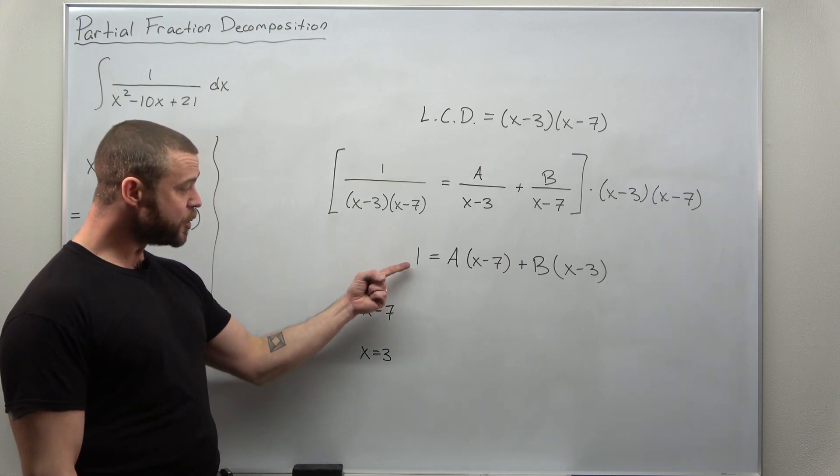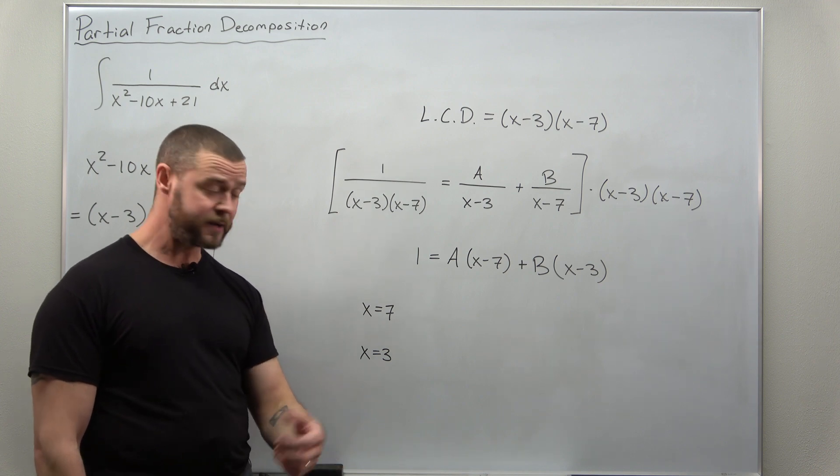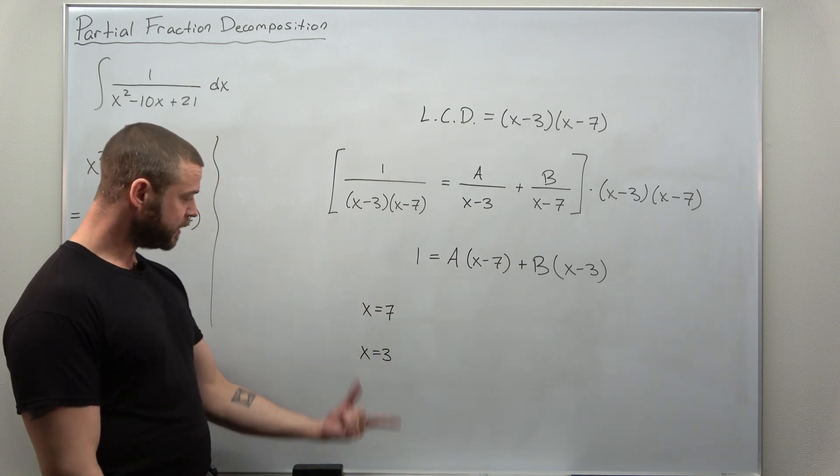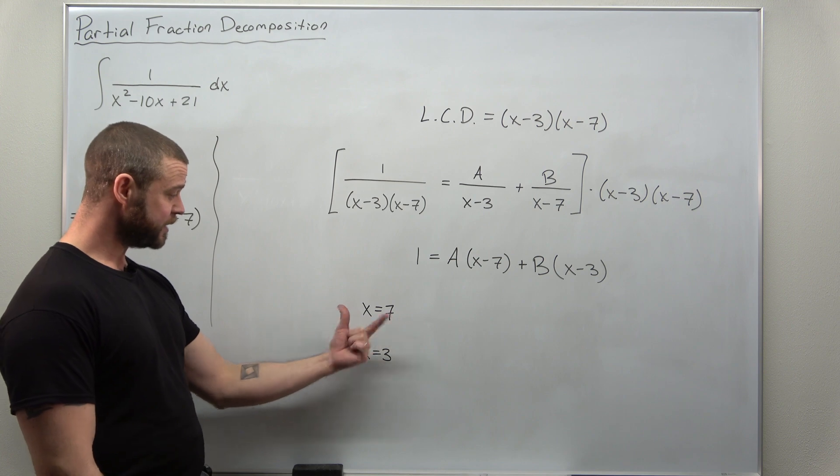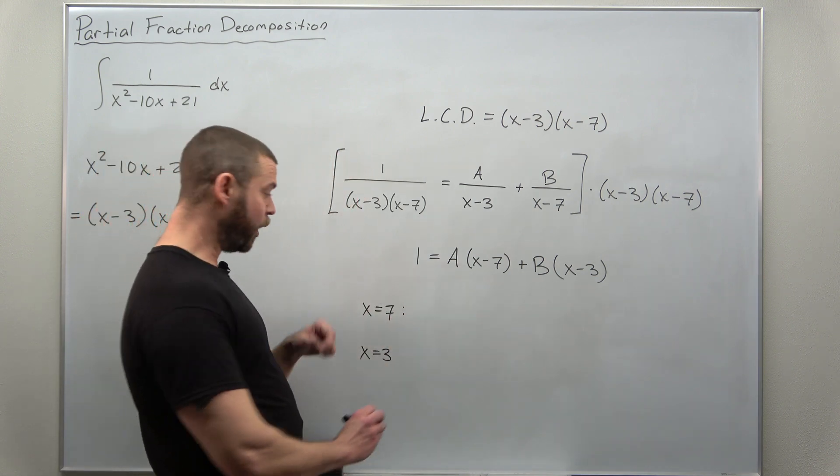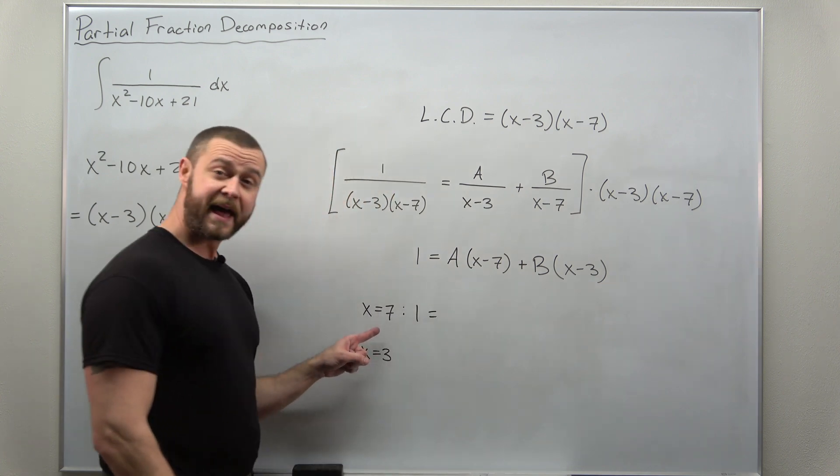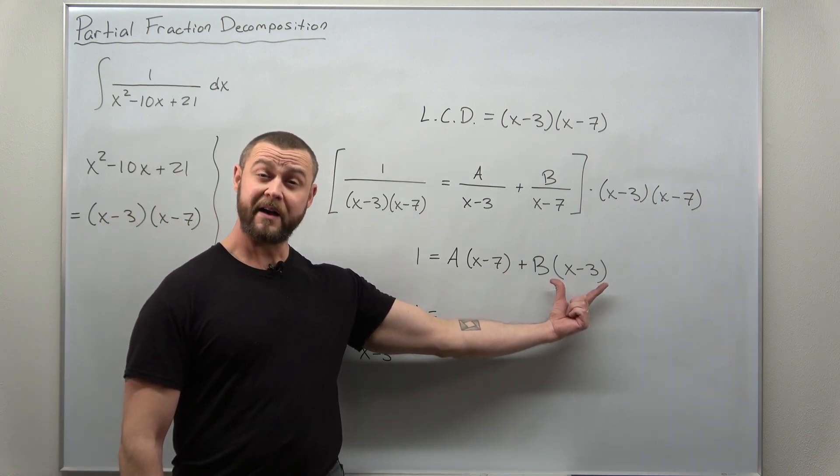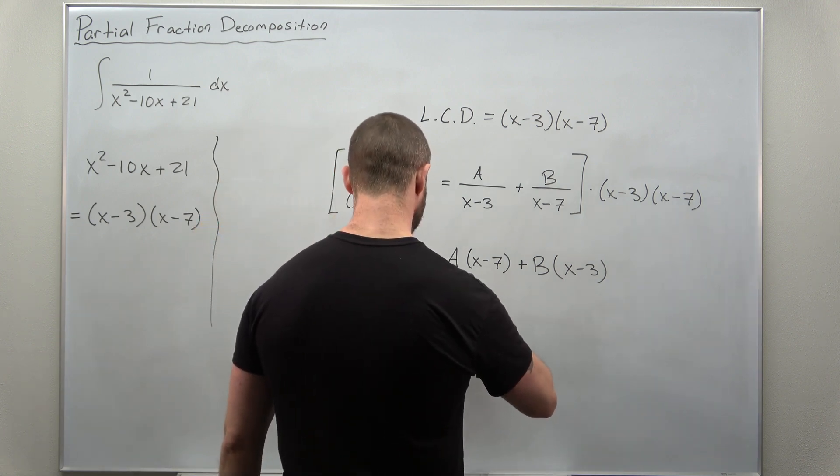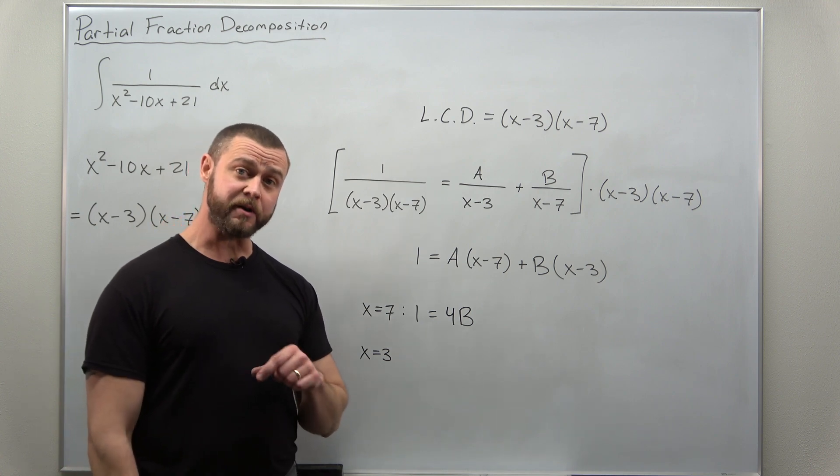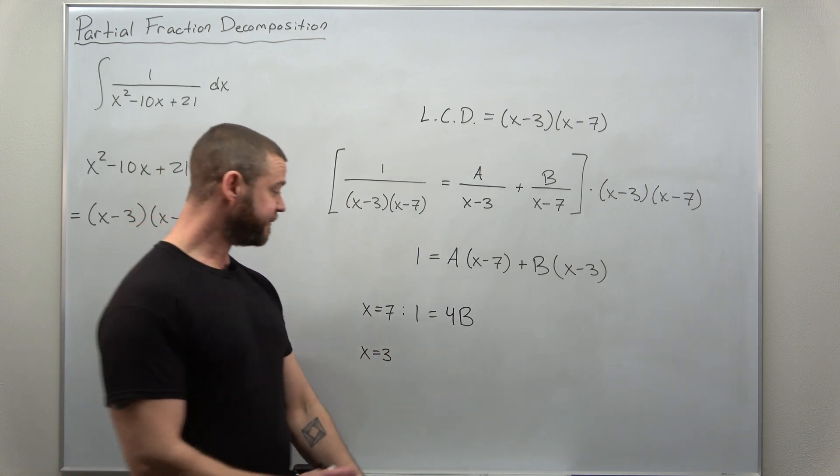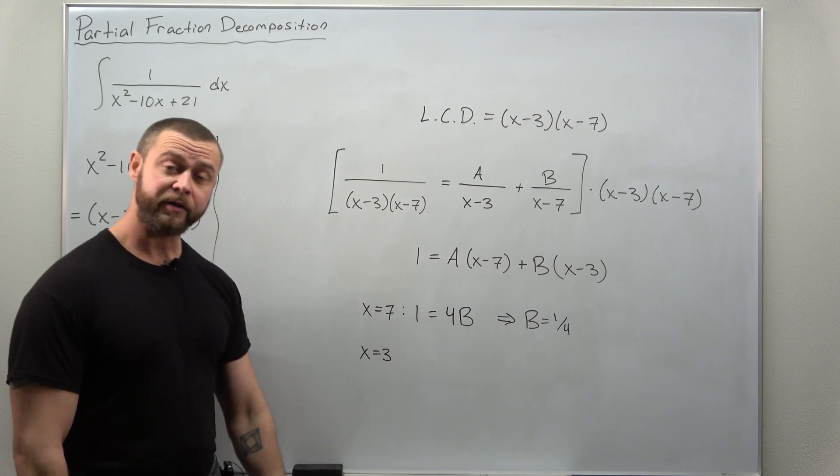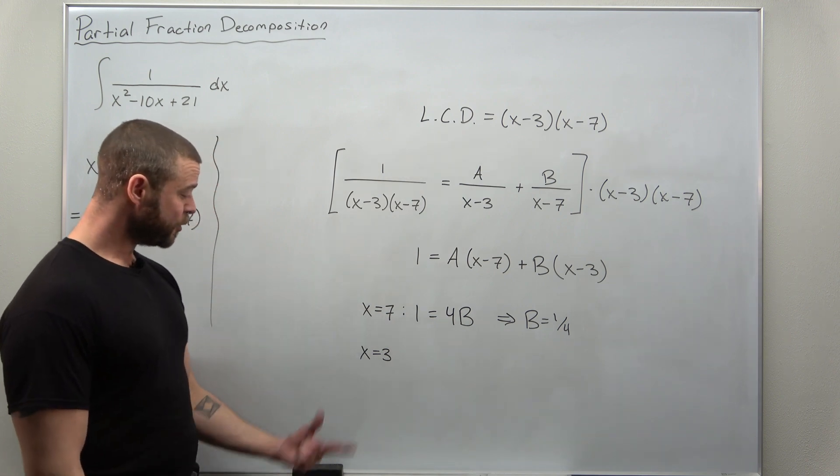Now this equation has no x's on the left side. Some other examples there might be, so you would plug your values of x in on both sides, but here our left side is just 1. If we plug in x equal to 7, the equation that we get, the left side is 1. With x is 7, the A term drops out, and when x is 7, this term we get 4B. And that is a very simple equation that we can solve for B, just divide by 4. And we should get B as 1 fourth.